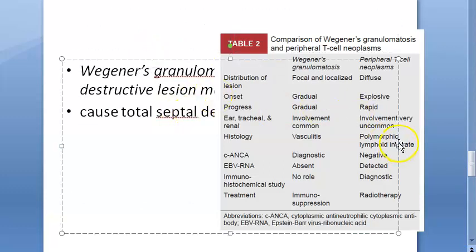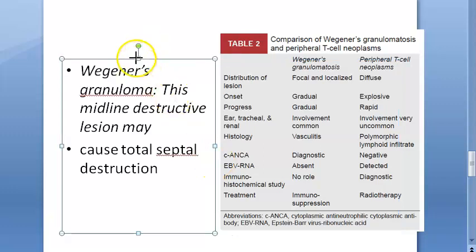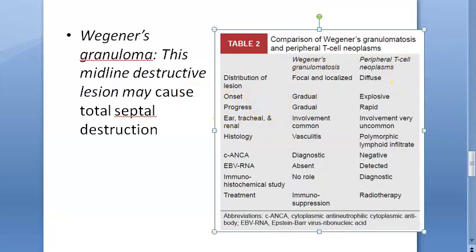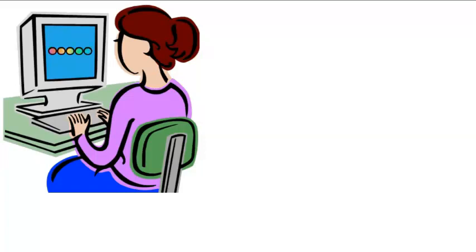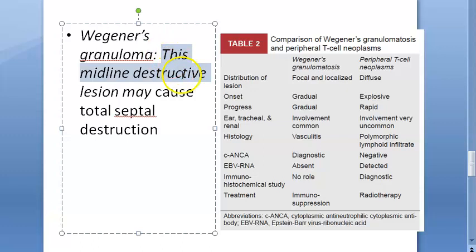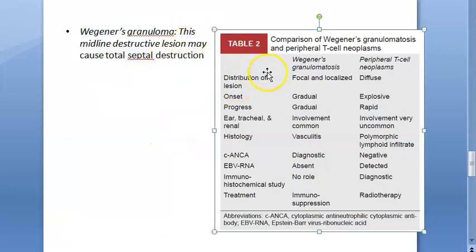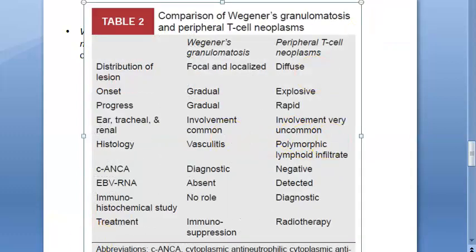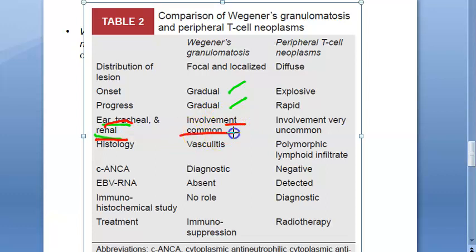Now comparing Wegener's granulomatosis with peripheral T-cell neoplasm. The midline destructive lesion may cause total septal destruction in Wegener's granulomatosis, along with pulmonary and renal involvement. Looking at the comparison table: in Wegener's granulomatosis onset is gradual and progress is gradual, but there is renal, ear, and tracheal involvement. In contrast, peripheral T-cell neoplasm has explosive onset and rapid progress.